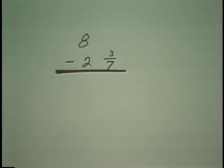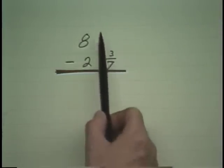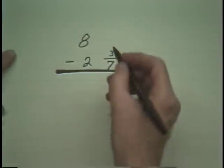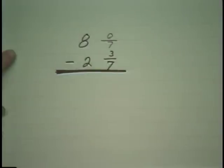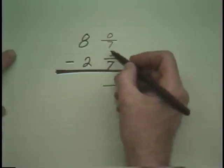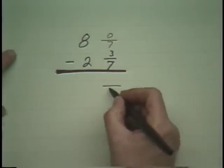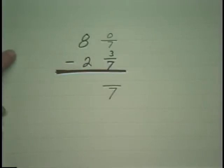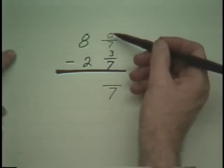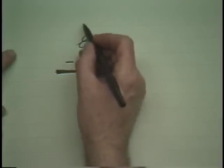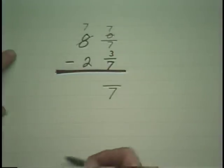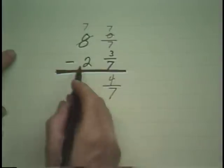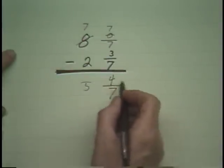Now this sort of looks the same except now we are subtracting 3 sevenths from zero, and I can't do that. But that's the same as saying I have 8 and no sevenths — or 0 sevenths. In this case I see that I do have a common denominator of 7, but 3 will not subtract from zero. So I borrow: I make this one smaller and add the denominator to the numerator. Now 3 from 7 is 4, 2 from 7 is 5, and I am done.